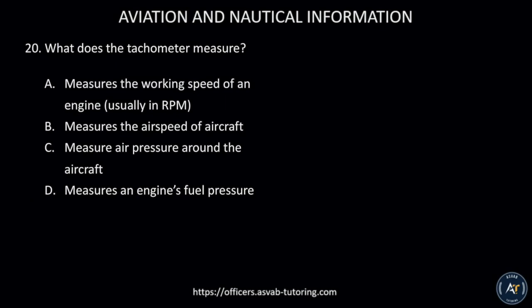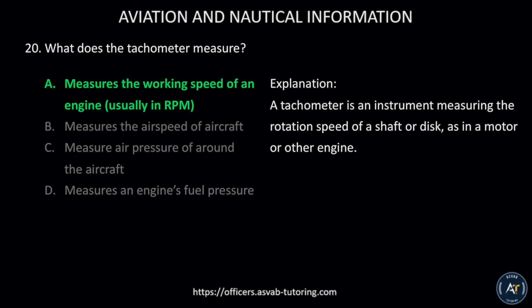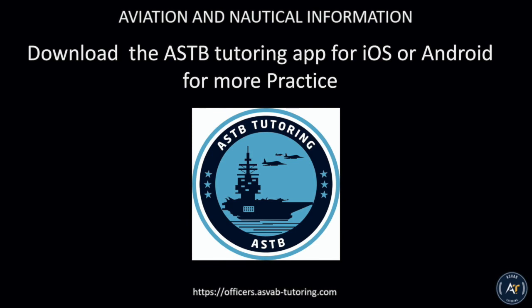Number twenty: What does the tachometer measure? A) The working speed of an engine, usually in RPM, B) The airspeed of aircraft, C) Air pressure around the aircraft, or D) An engine's fuel pressure. The correct answer is A, it measures the working speed of an engine, usually in RPM. A tachometer is an instrument measuring the rotation speed of a shaft or disc, as in a motor or other engine. Download the ASTB tutoring app for iOS or Android for more practice.